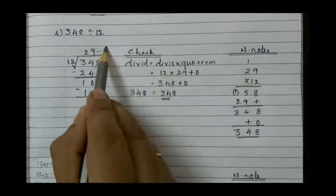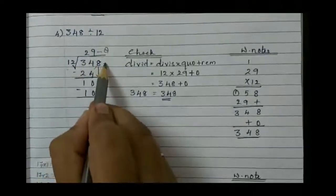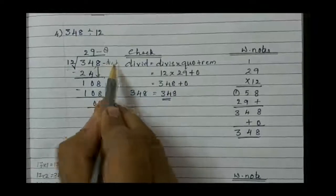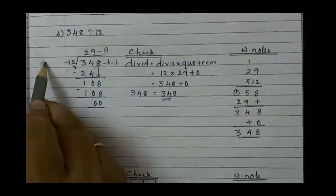So 29 is the quotient. 348 is dividend and 12 is divisor.